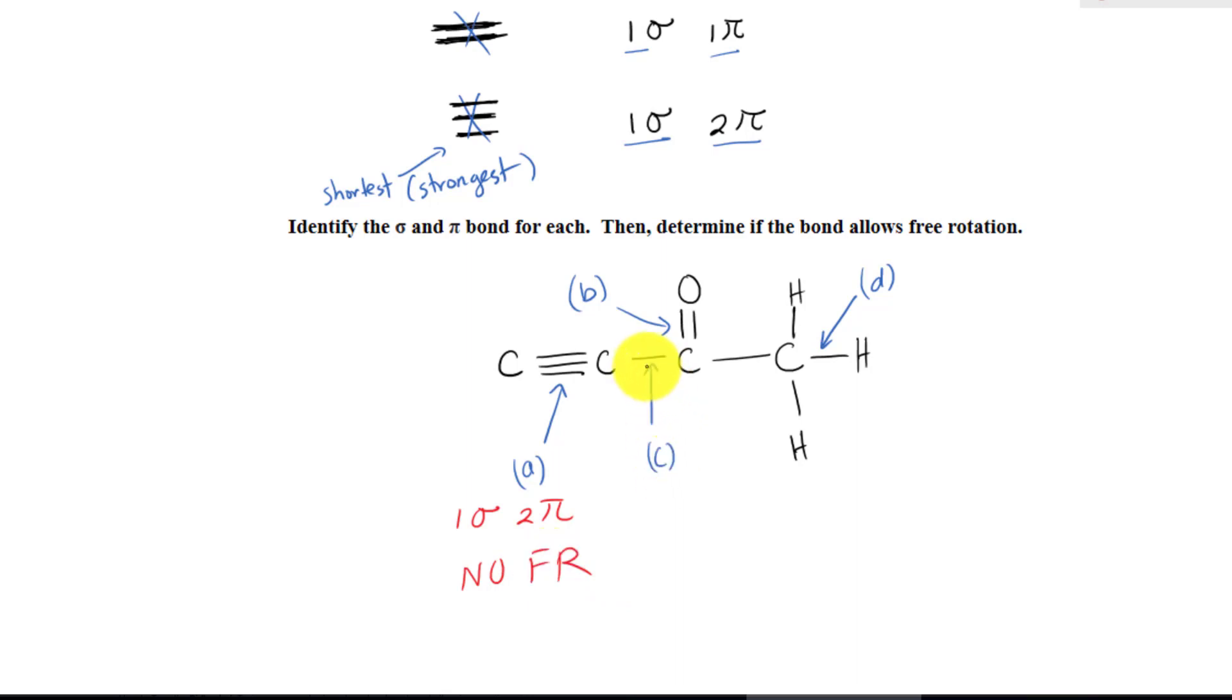What about C? C just has a single bond, so it just has one sigma bond. Because it's a single bond, now it allows free rotation. There you go. Isn't that easy?